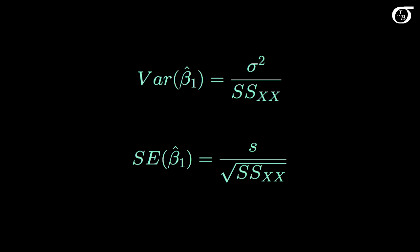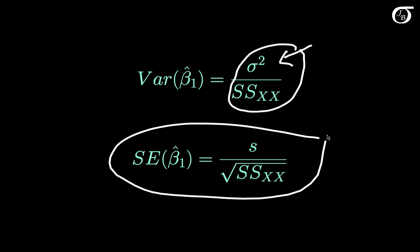So mathematically it can be shown that the variance of beta 1 hat is equal to sigma squared over the sum of squares for x. But we're not going to know that sigma squared. We replace this sigma squared with our sample variance and we take the square root. And that gets us our standard error of beta 1 hat. Fortunately for us, this is going to be given in computer output, so we're not actually going to have to go through and do these calculations by hand.